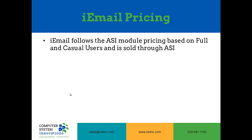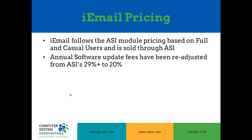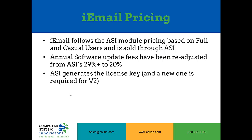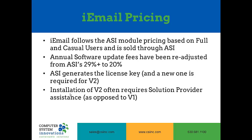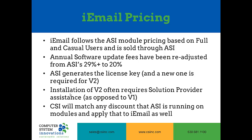iEmail is sold through ASI and follows the ASI module pricing based on full and casual users. The annual software update fees have been readjusted from ASI's 29% to CSI's 20%. ASI will generate the license key upon purchase, and if you already have iEmail version 1 and want to upgrade to version 2, ASI can also generate that license key. Installation of version 2 often requires solution provider assistance since it is a web service. CSI will match any discount that ASI is running on their other modules and apply that to iEmail as well.